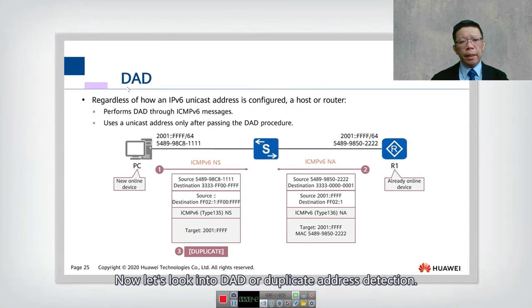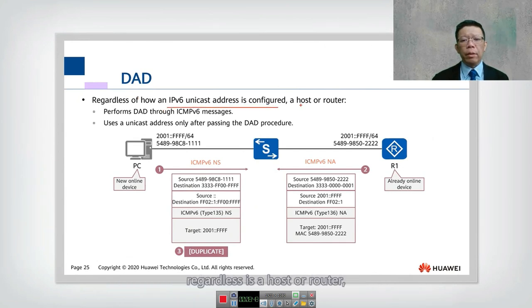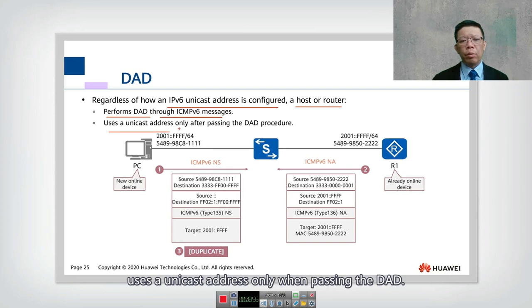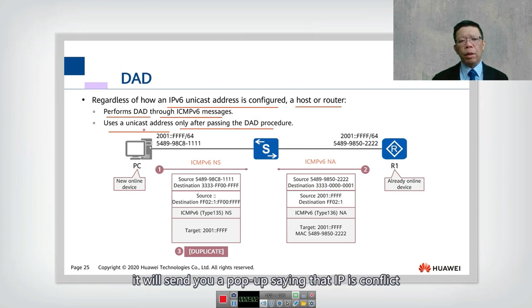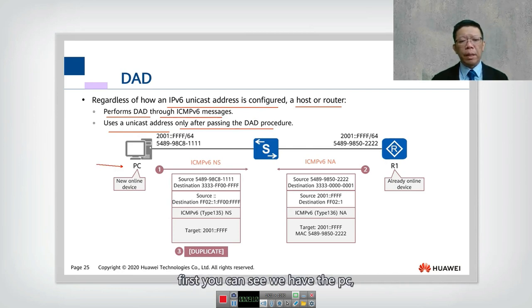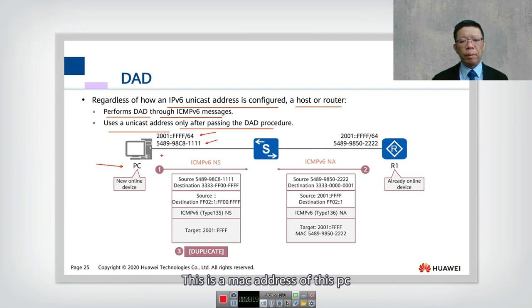Now let's look into DAD — Duplicate Address Detection. Regardless of how an IPv6 unicast address is configured, whether on a host or router, it will perform DAD through ICMPv6 messages, and only uses the unicast address after passing DAD. If a duplicate is detected, the system will indicate that the IP address is in conflict. In this example the PC wants to use the address 2001::ffff:64, derived from its MAC address.